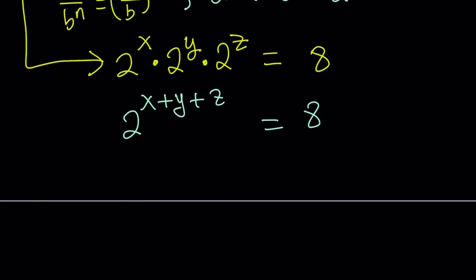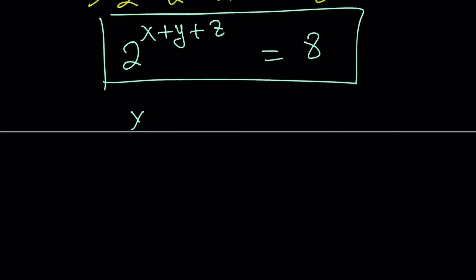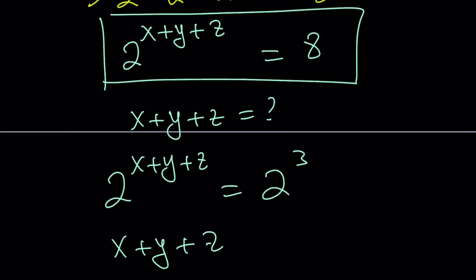But always keep in mind what the question is. It's important when solving a problem, you should always think about what the question is because that'll help you get to the answer faster. And we weren't looking for 2 to the power x plus y plus z, but we were looking for x plus y plus z. And it's easy to do now because 2 to the power x plus y plus z is equal to 2 to the power 3. And from here, you can easily say that, hey, x plus y plus z is equal to 3.